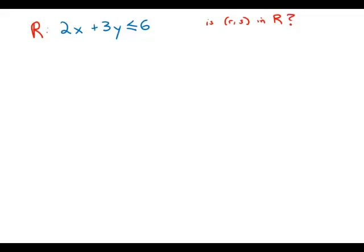In the xy-plane, region R consists of all the points xy such that 2x plus 3y is less than or equal to 6. It's the point rx in region R. So in other words, we want to find pairs of real numbers that satisfy the blue inequality.